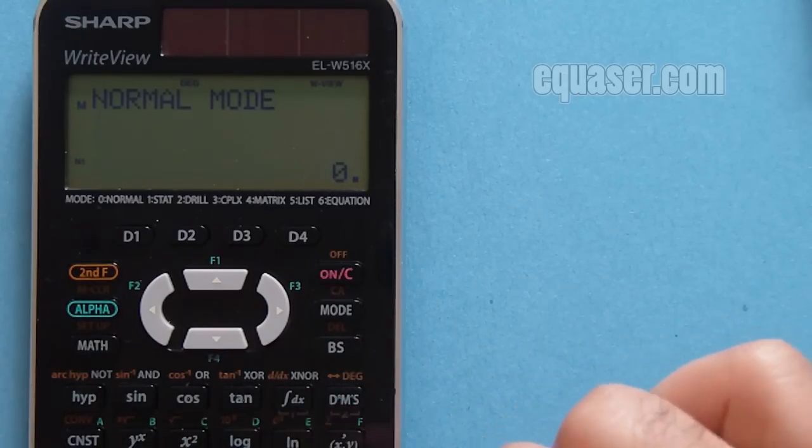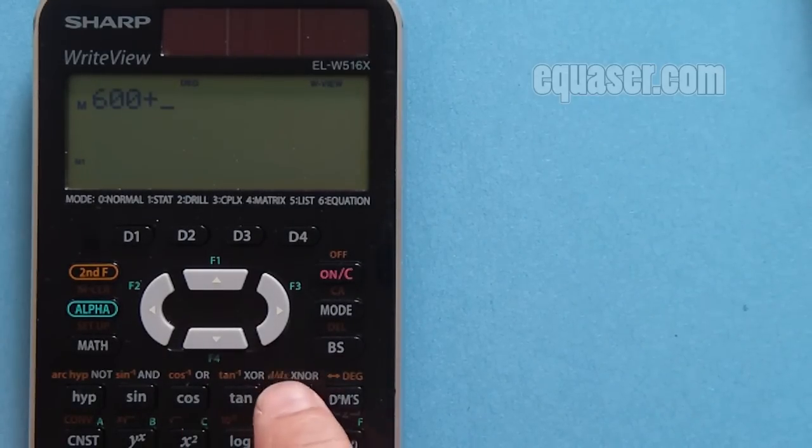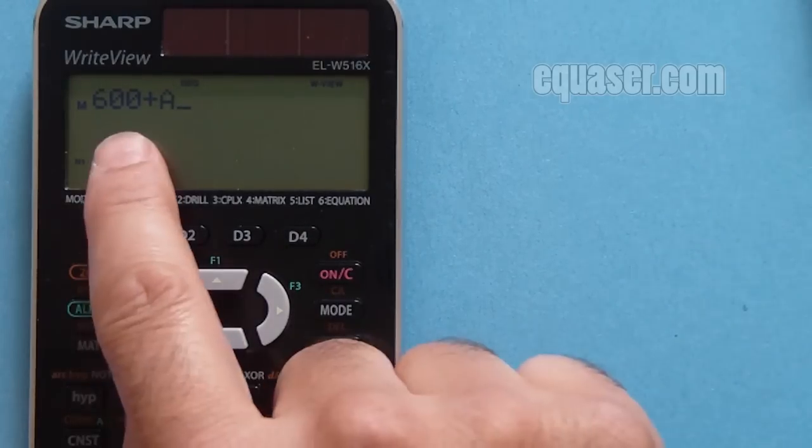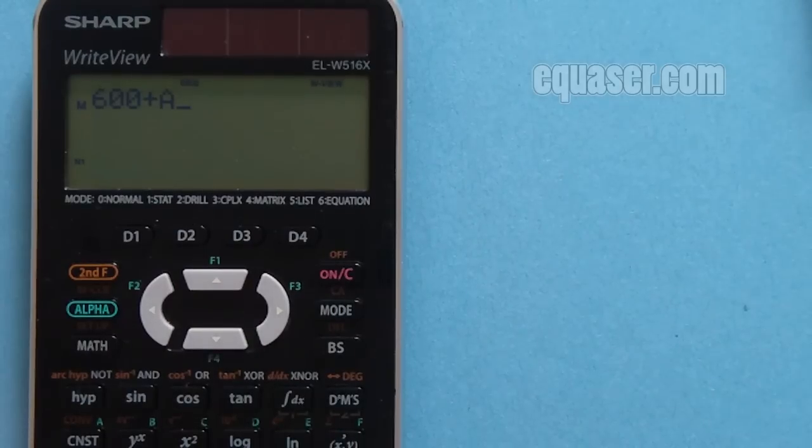Let's say I want to add 600 plus whatever is in the memory. So I press 600 plus RCL, which is recall, and then A. If I press the equal sign, you will see that it has been added to 2100.